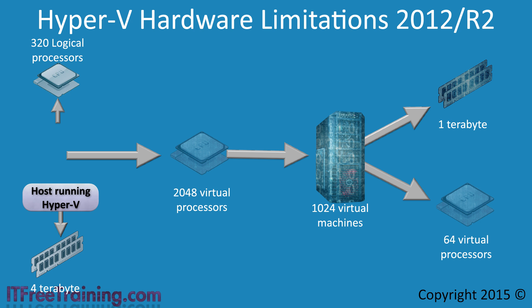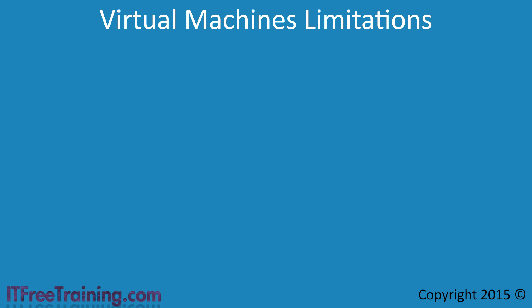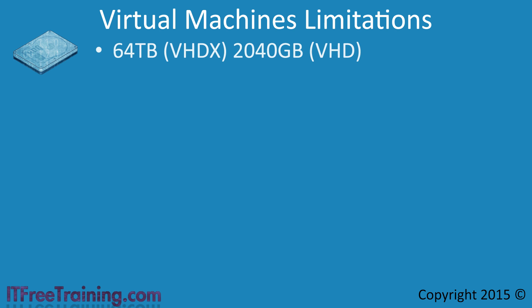I will now have a closer look at the virtual machine's limitations. For the virtual machine, the virtual disk is limited to 64TB using the new VHDX format. The VHDX format is only available on Windows Server 2012 and Windows 8. If you are running Hyper-V on an older operating system, you will need to use the VHD format which is limited to 2040GB.